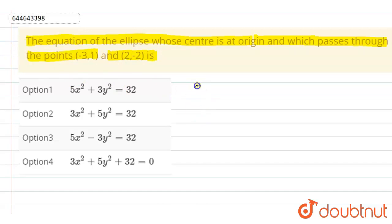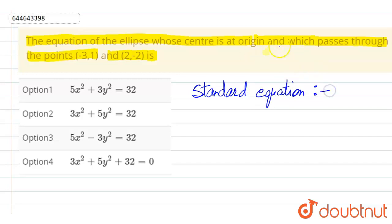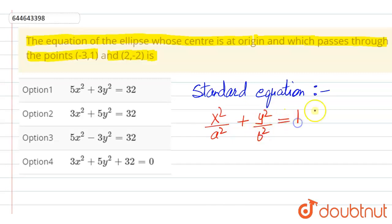First, we should know that the standard equation of an ellipse whose center is at the origin is given as: x² divided by a² plus y² divided by b² is equal to 1. This is the standard equation.